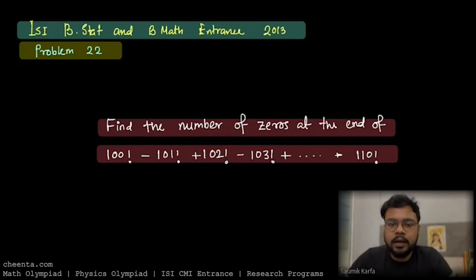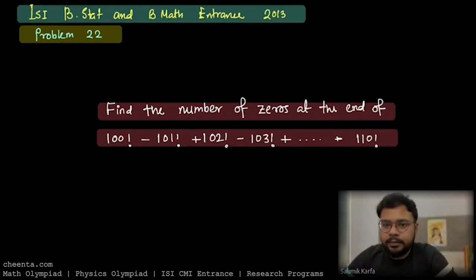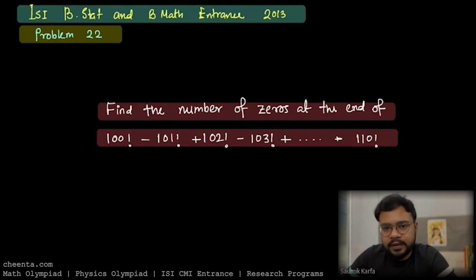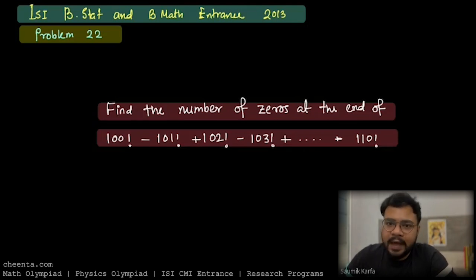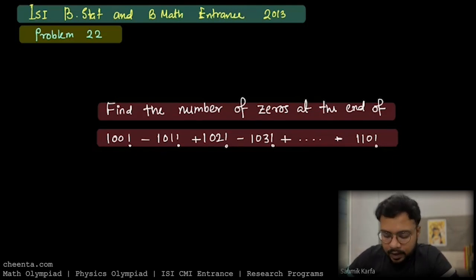Let us discuss Problem 22 from ISA BSTAT and BMATH inference 2013. It is a number theory problem that asks us to find the last digit of an expression where each term is a factorial. The expression starts from 100 factorial and goes till 110 factorial as an alternating sum.